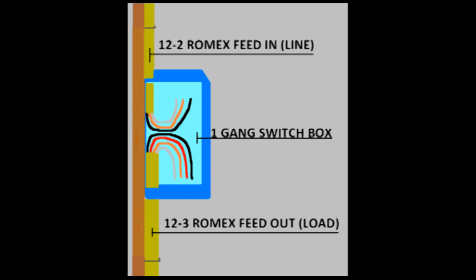Starting with the switch box, you have 12-2 Romex feeding the branch outlet circuit. You also have 12-3 Romex feeding out to the other branch outlets as well as to the half-hot.